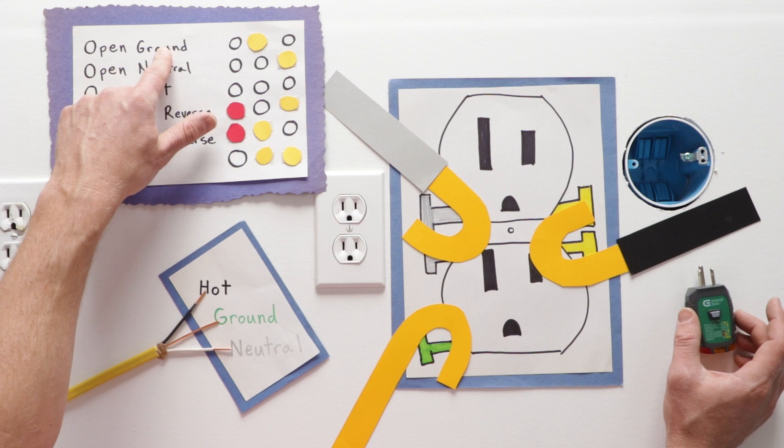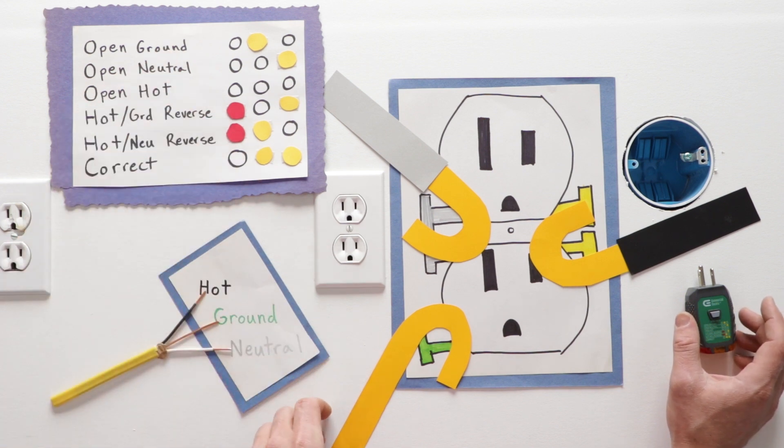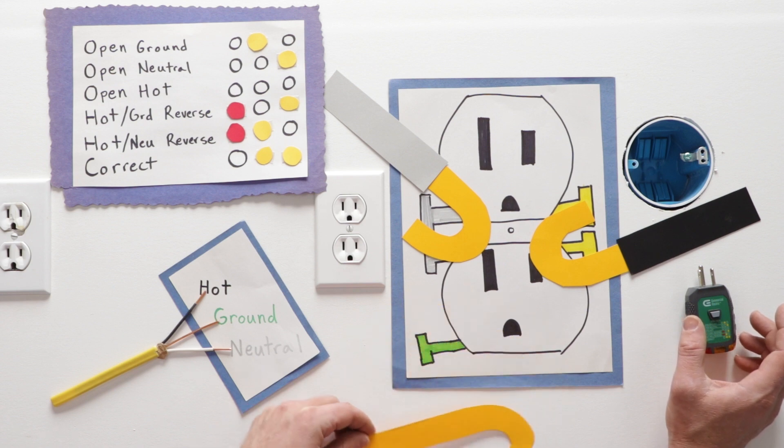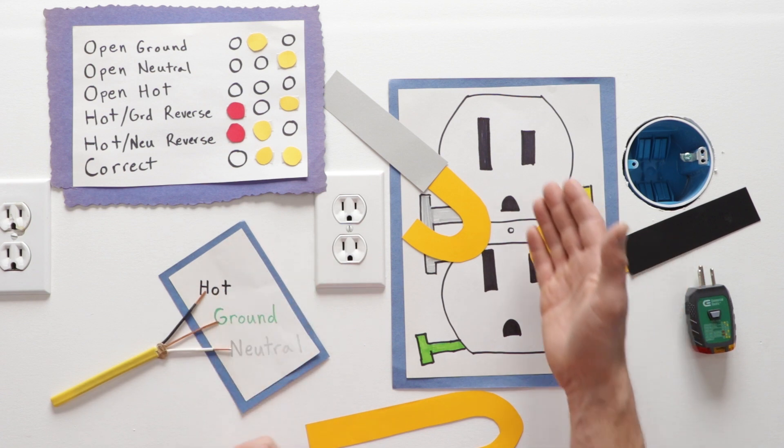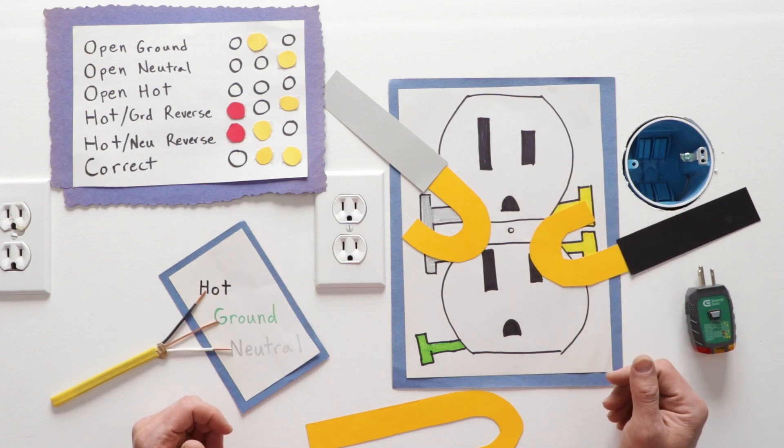We have an open ground. That just basically means this ground is not connected. It's open. There is no grounding here, which we should solve.